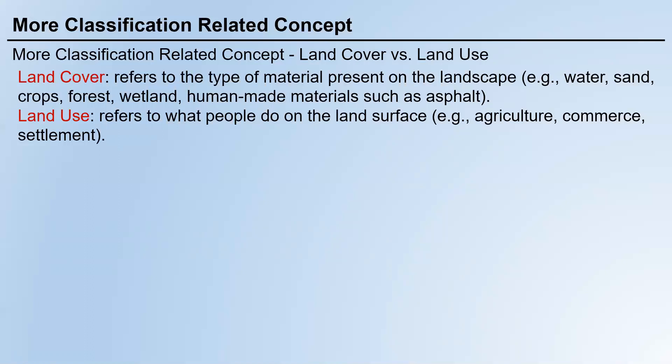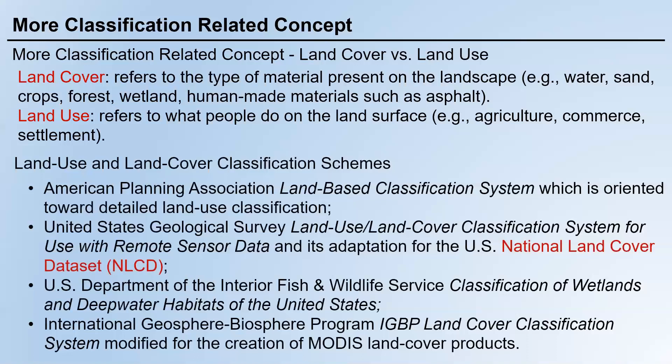Land cover is more specific. To unify the use of terminology and principles for land cover and land use, different governments — national governments in the US, central governments in China, and other countries — each have their own land use and land cover classification schemes. These schemes have been applied within specific countries so that local government, researchers, students, and industry workers can follow them as standards.